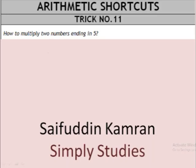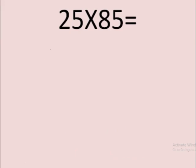Shortcuts trick number 11: how to multiply two numbers ending in 5. Let's see what this means. For example, we have two numbers 25 and 85, both ending in 5. Let's see the first trick.